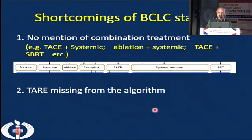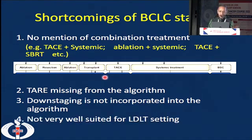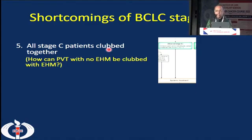We have seen that TARE is a very good modality and patients do benefit from it. Downstaging is not incorporated in the algorithm — BCLC does recommend transplant but does not say when to downstage before transplant. BCLC is also not well suited for the LDLT setting. Stage C patients are all clubbed together, so whether a patient has portal vein tumor thrombosis or extrahepatic metastasis, they are all in a single advanced stage group for which systemic treatment is advised.